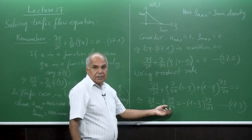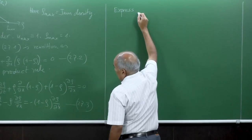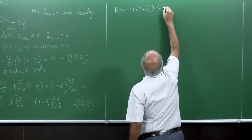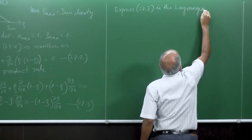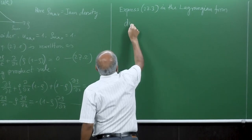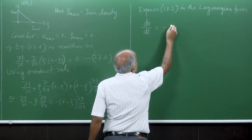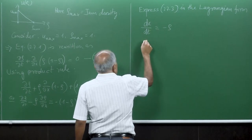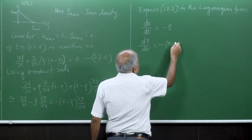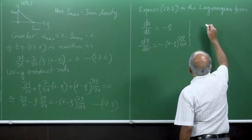Now we want to solve equation 27.3 with the particle method in Lagrangian form, as before. The characteristics give dx by dt equals minus rho. Note that in the Burgers equation we had plus rho, but here it is minus rho. The material derivative gives d rho by dt equal to minus (1 minus rho) del rho by del x. This is the system in discrete form.